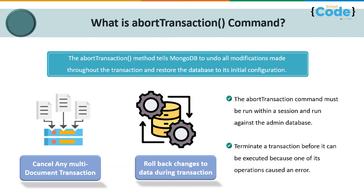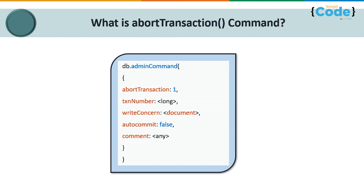It will also terminate any transaction before it can get executed if one of the operations caused an error. To run abort transaction, the command must be run against the admin database and run with start session initially. The syntax is: db.adminCommand({ abortTransaction: 1, txnNumber: Long(...), writeConcern: { document }, autocommit: false, comment: '...' }). When a transaction aborts, all data changes made by the write transactions are discarded without ever being visible, and the transaction eventually ends automatically.